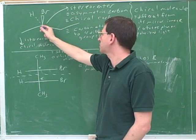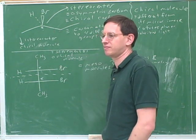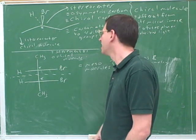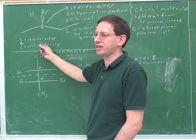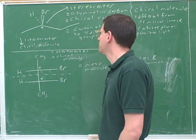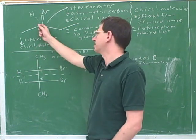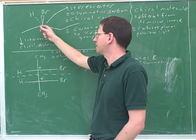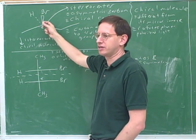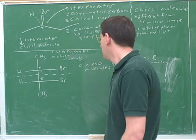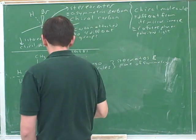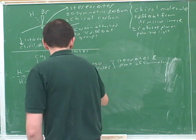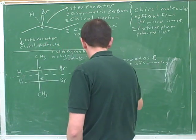Would this other molecule rotate plane polarized light? Yes, by definition, because it is a chiral molecule — so it would rotate the light. Here we have one stereocenter, and it clearly is not canceled out by any other stereocenters because there are no other stereocenters.